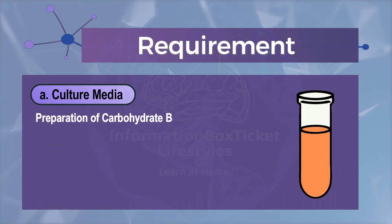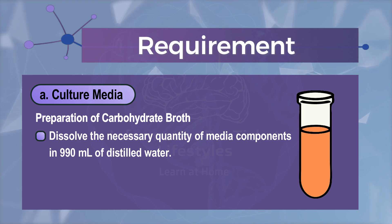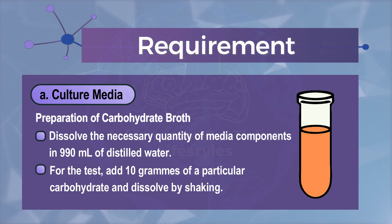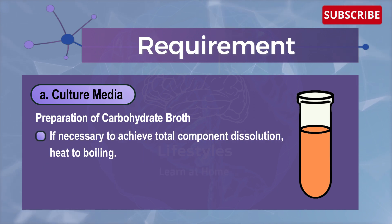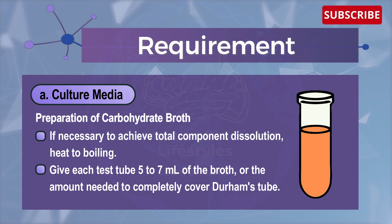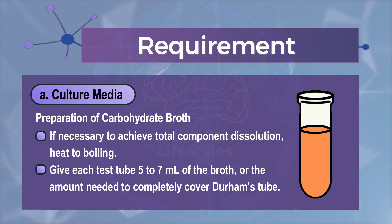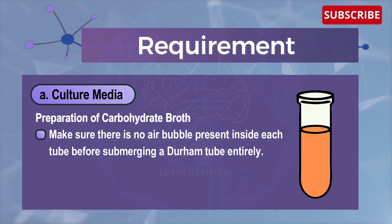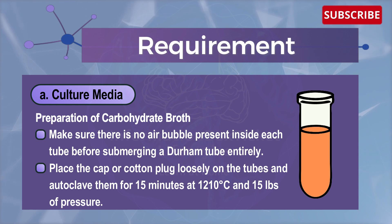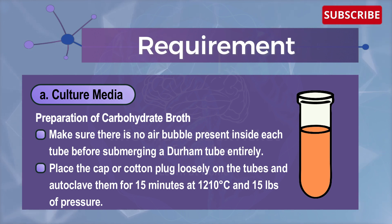For preparation: dissolve the necessary quantity of media components in 990 ml of distilled water. For the test, add 10 g of the particular carbohydrate and dissolve by shaking. If necessary, heat to boiling to achieve total component dissolution. Give each test tube 5–7 ml of the broth, enough to completely cover the Durham tube. Make sure there is no air bubble present inside each tube before submerging the Durham tube entirely.